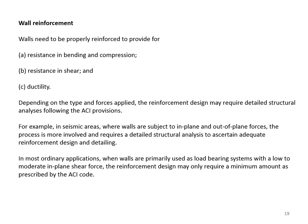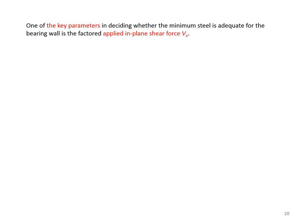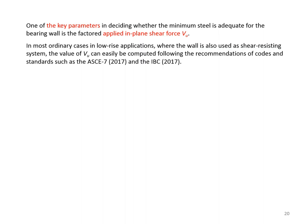In most ordinary applications, when walls are primarily used as load-bearing systems with low to moderate in-plane shear force, the reinforcement design may only require a minimum amount as prescribed by the ACI code. One key parameter in deciding whether minimum steel is adequate is the factored applied in-plane shear force VU, which can be computed following ASCE 7 and IBC 2017 recommendations.